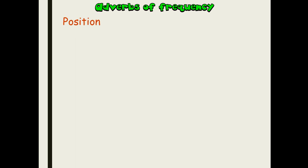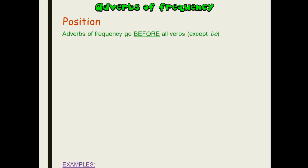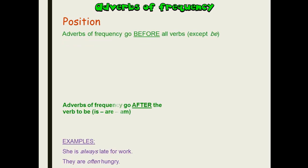It's before the main verb, after verb to be. Let's see the example here. She's always late for work. 'Is, always' — because 'is' is verb to be, so that's why we put 'always' after.